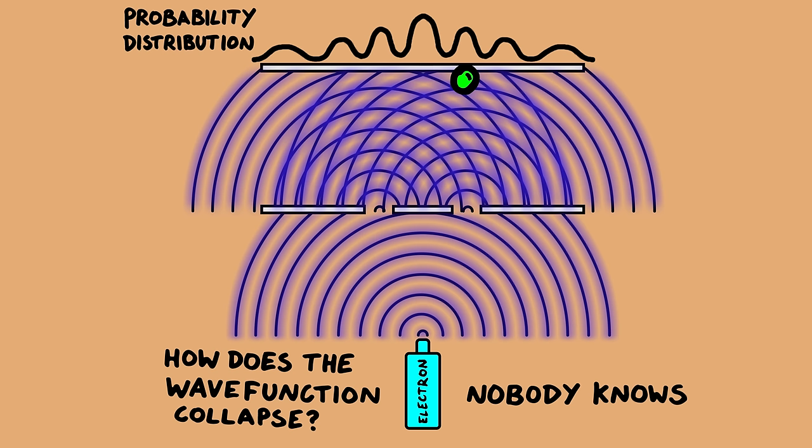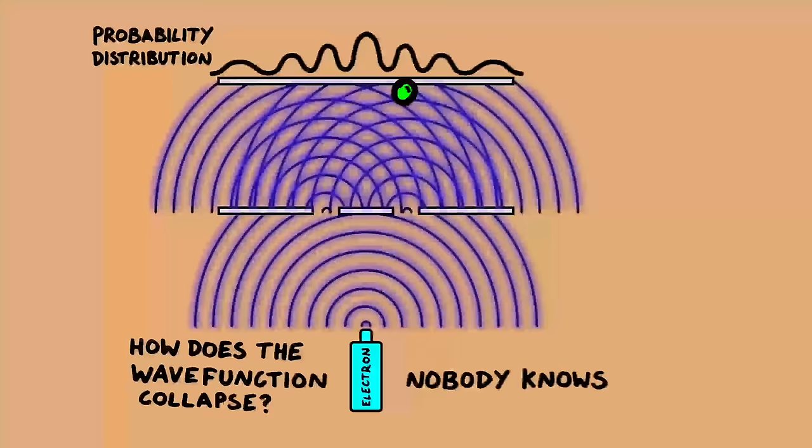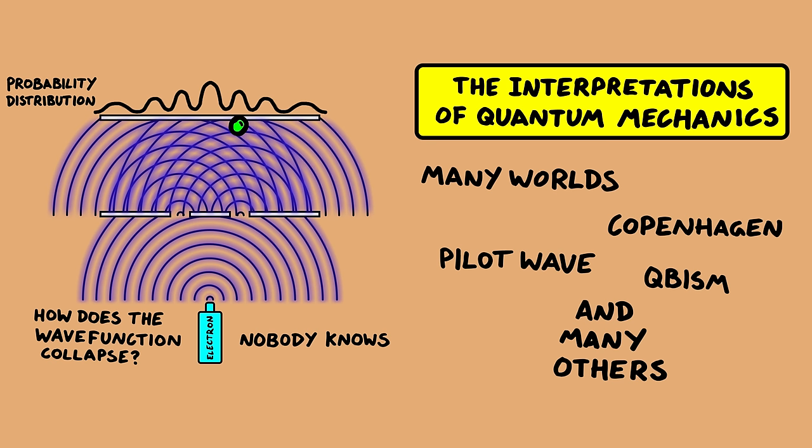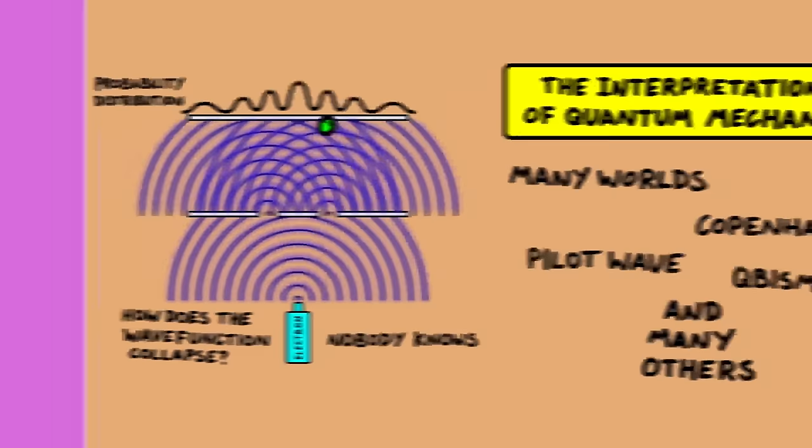And this is not only true for electrons, but everything in the universe. So this double slit experiment has huge consequences for our model of the universe. And it was very surprising the first time it was done. Physicists are still grappling with this question today, and have come up with many interpretations of quantum mechanics to try and explain these results, and explain how reality actually works.